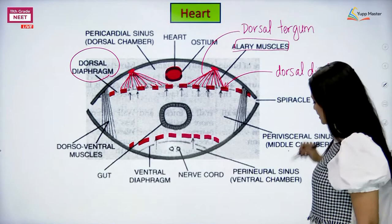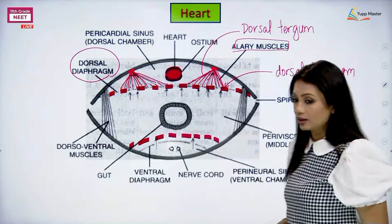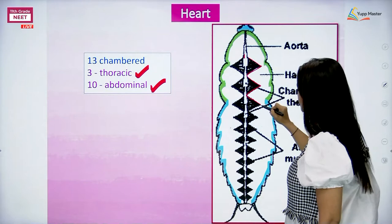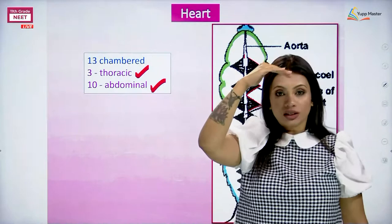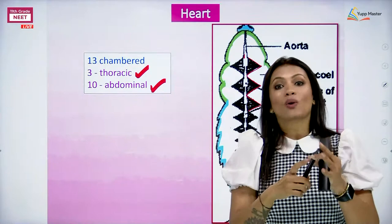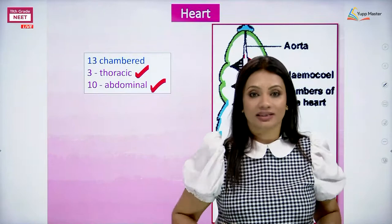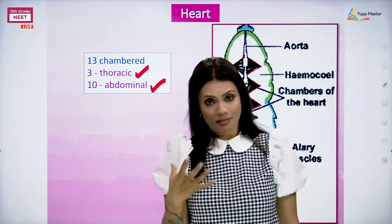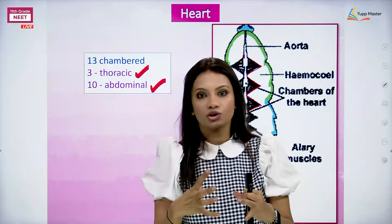These alary muscles are going to be around the heart. They are around the heart ranging from dorsal tergum to dorsal diaphragm, surrounding the heart, so that they can contract and help the heart in its peristaltic movements. The heart of the cockroach is muscular, but along with the heart's own muscles, it also requires some help. These alary muscles actually help that heart to contract.